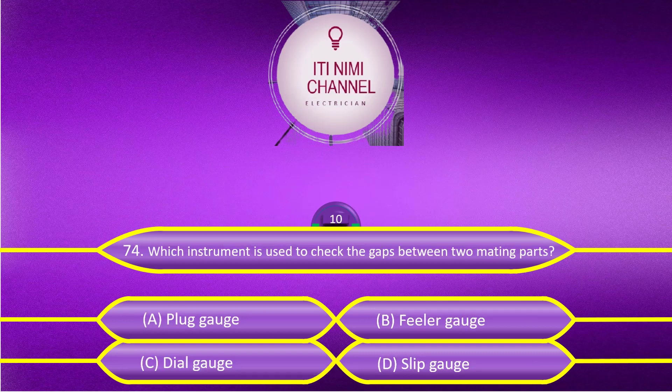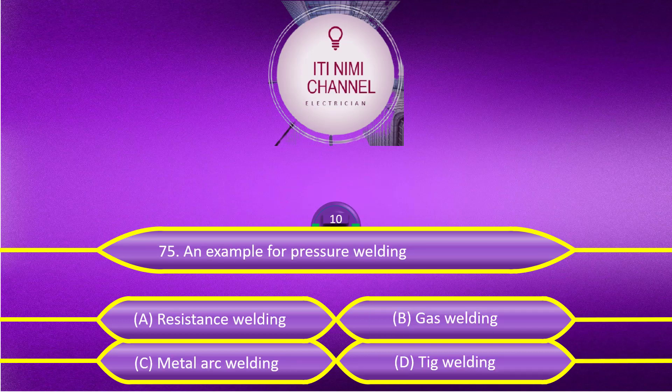Which instrument is used to check the gap between two mating parts? Option A, Plug Gauge; Option B, Filler Gauge; Option C, Dial Gauge; Option D, Slip Gauge. The answer is Option B, Filler Gauge.